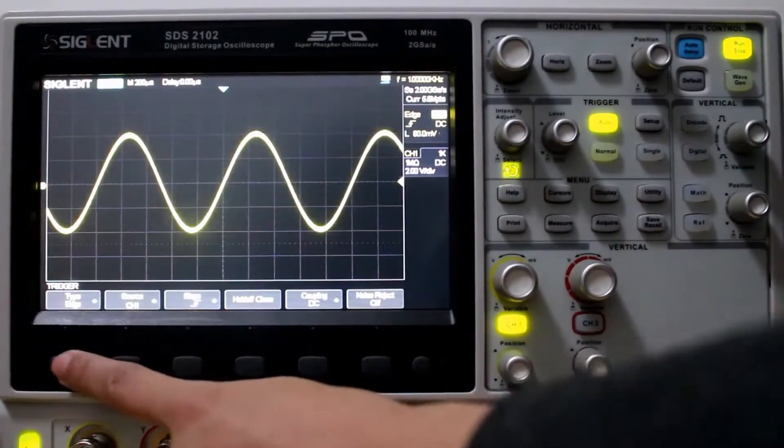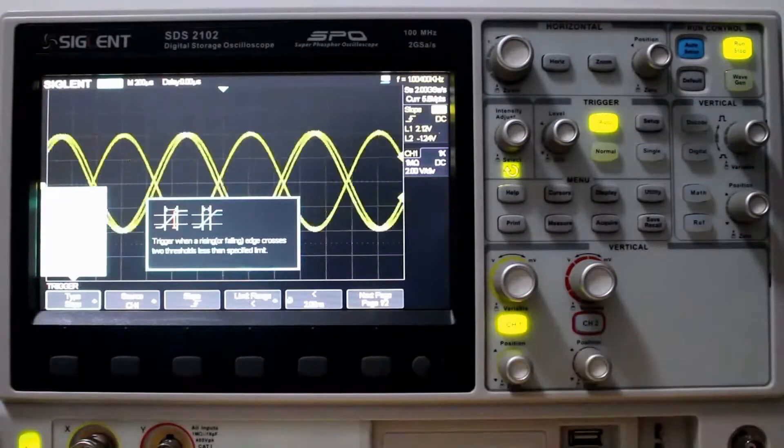We looked at the edge trigger type with a sine wave. Let's change it to slope and a ramp wave.